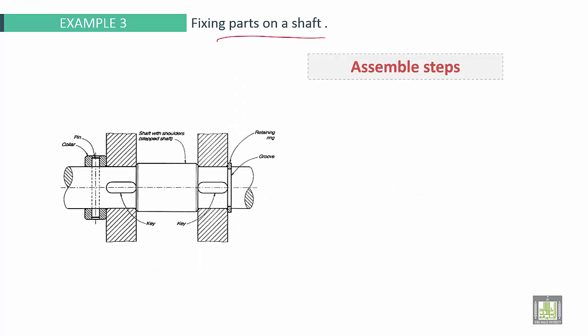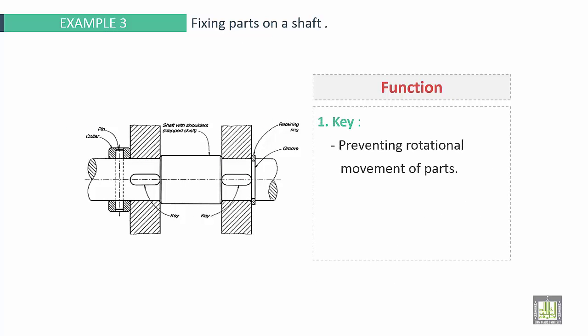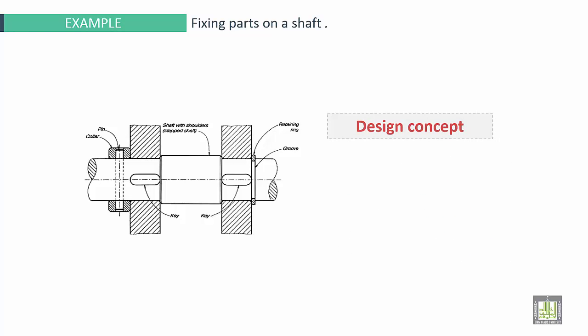As a design concept, to avoid direct contact between rotating shaft and casing as well as gland rings hole. Third example, fixing part on a shaft. As assemble steps: first, place the key on the key seats here. Second step, insert the parts to the shaft until their surfaces lean against the shoulder, here and here. Third step, insert collar and then pin, or rotate a retaining ring into the groove. Here we have the retaining ring here. Make it in its place. And here we have the pin and the collar. So to prevent translation. As a function, the key preventing rotational movement of parts. And pin and retaining ring to prevent axial movement or translation of parts on the shaft. As a design concept, retaining ring can resist lower axial force than collar pin unit.